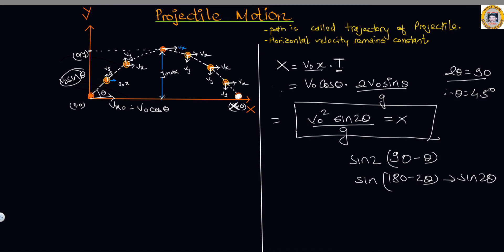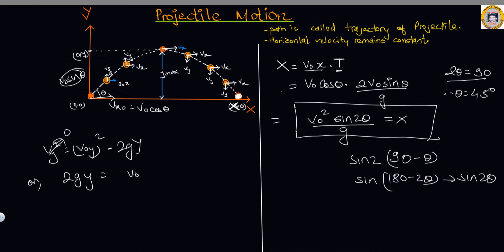Now let us find the maximum height, y-max. Using v-y-squared equals v-naught-y-squared minus 2g y, at maximum height v-y equals zero, so 2g y equals v-naught-y-squared. Since v-naught-y equals v-naught sine theta, we get v-naught-y-squared equals v-naught-squared sine-squared theta. Therefore, the maximum height is y-max equals v-naught-squared sine-squared theta over 2g.